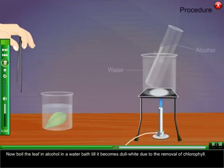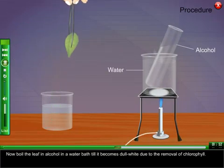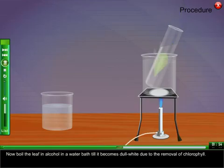Now boil the leaf in alcohol in a water bath till it becomes dull white due to the removal of chlorophyll.